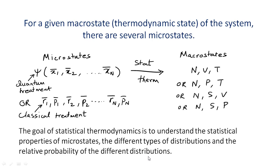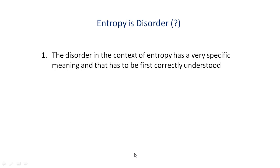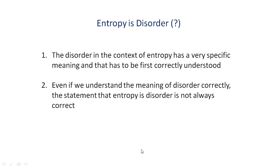Before closing this lecture let me draw your attention to an important point. Many of you have learned somehow that entropy is disorder. This statement is at best partially correct and at worst an undesired propagator of misunderstanding. The disorder in the context of entropy has a very specific meaning and that has to be first correctly understood. Moreover, even if we understand the meaning of disorder correctly, the statement that entropy is disorder is not always correct. Let me address these two points separately.